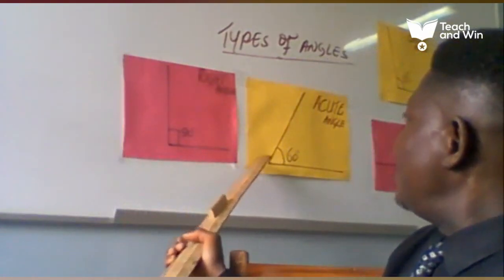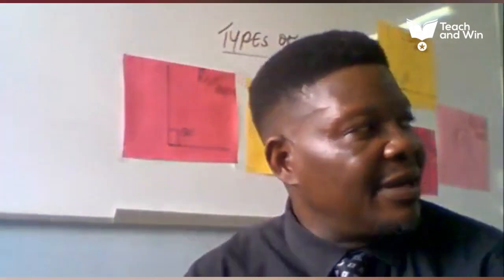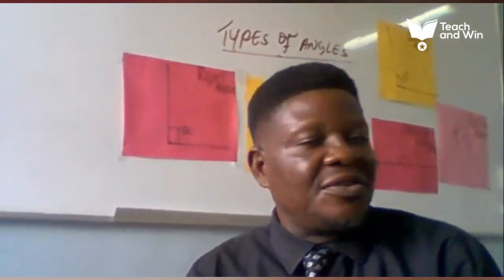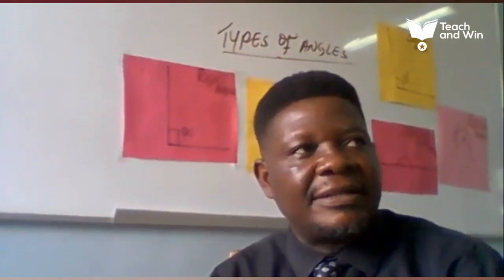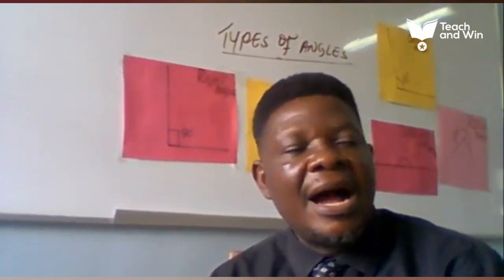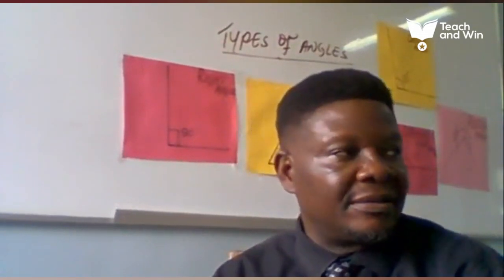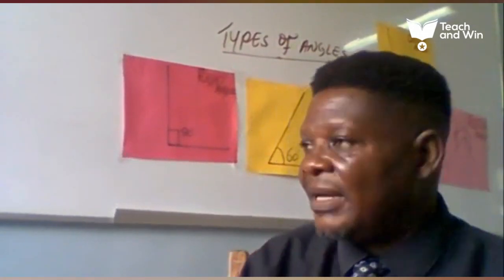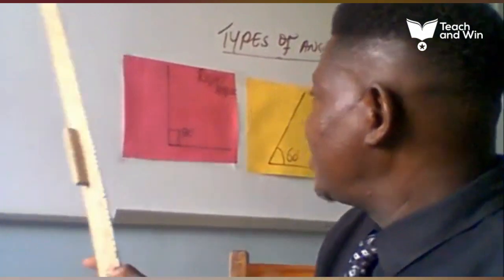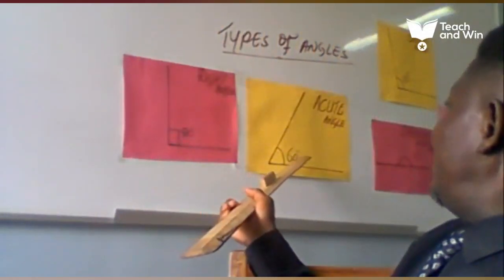But there are some angles that are less than 90 degrees. All angles between 0 to 89 degrees are called accurate angles. Angles that are less than 90 degrees are all called accurate angles.